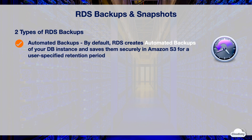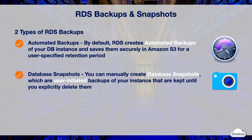By default, RDS creates automated backups of your DB instance and saves them securely in Amazon S3 for a user-specified retention period. You can also manually create database snapshots, which are user-initiated backups of your instance that are kept until you explicitly delete them.